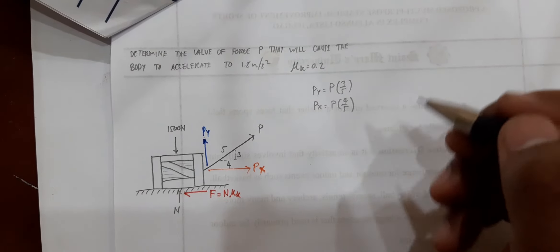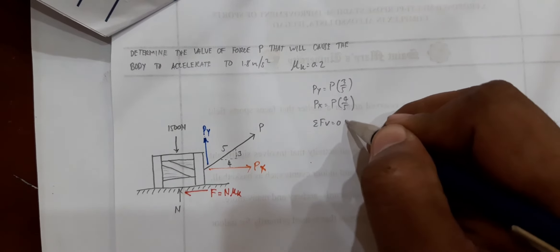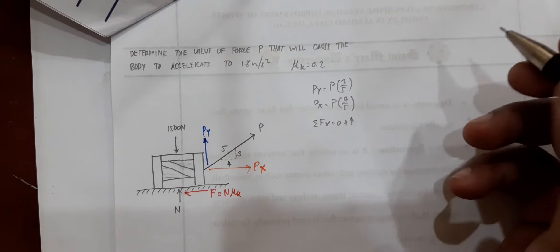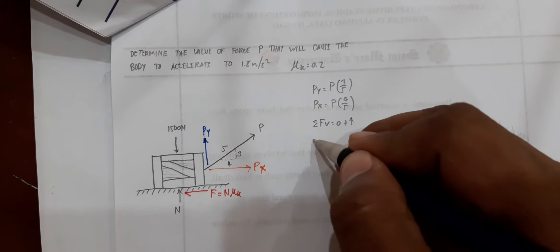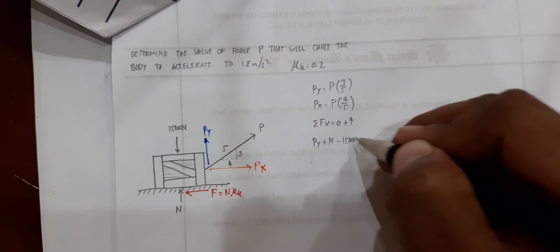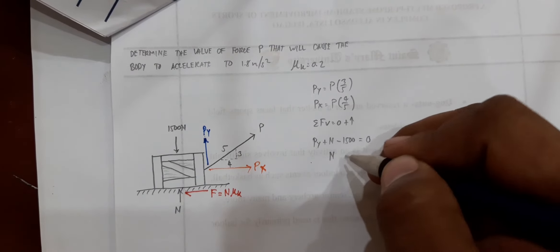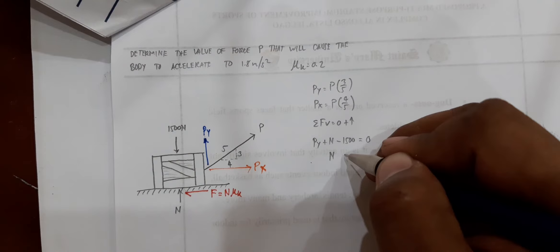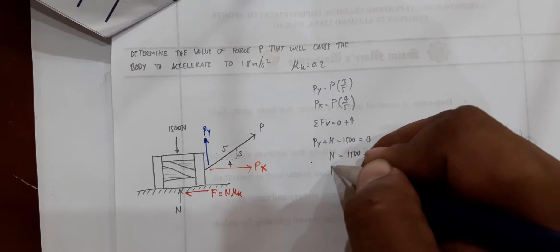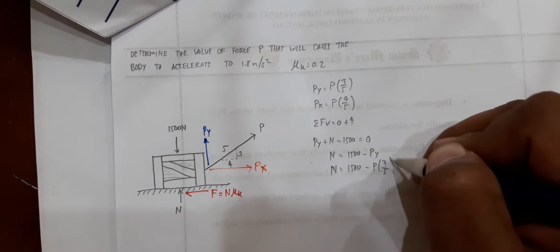As for the vertical axis, you would have summation of forces vertical equal to 0 — taking positive upwards — because you are in a state of equilibrium along the vertical axis. On the upward direction you have PY and N, and on the downward direction you have 1,500 Newtons. Solving for N: N is equal to 1,500 minus PY, which is N = 1,500 minus P times 3 over 5.